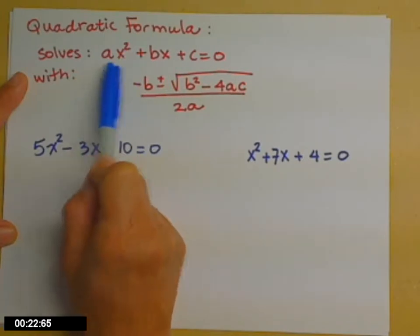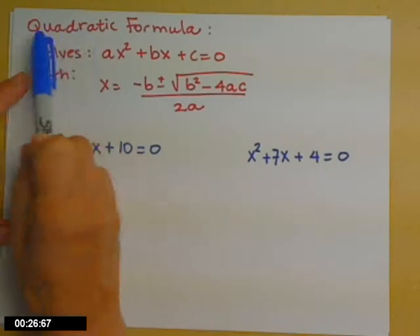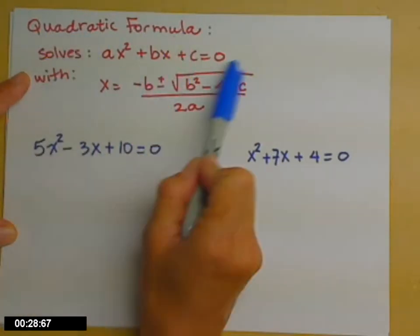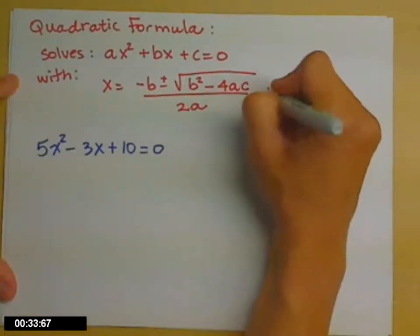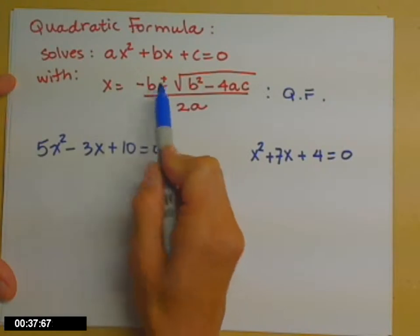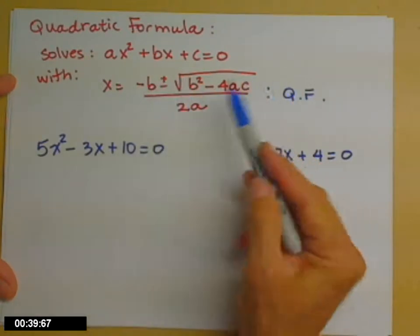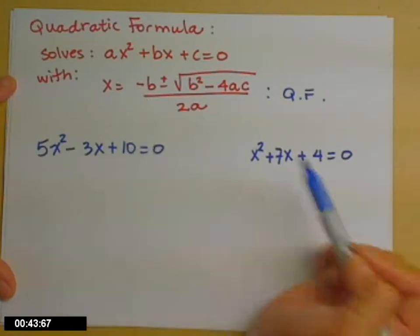a is our x squared coefficient, b is our x coefficient, and c is our constant term. So the quadratic formula solves a quadratic equation with this formula. This is the quadratic formula: x equals negative b plus or minus square root of b squared minus 4ac all over 2a.